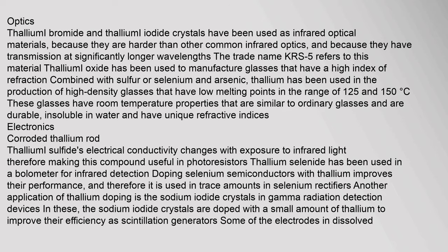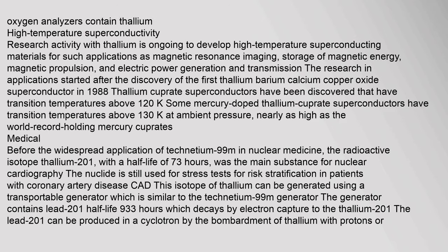Doping selenium semiconductors with thallium improves their performance, and thallium is used in trace amounts in selenium rectifiers. Thallium doping is also used in sodium iodide crystals in gamma radiation detection devices to improve their efficiency as scintillation generators. Research with thallium is ongoing to develop high-temperature superconducting materials for applications such as MRI, magnetic energy storage, magnetic propulsion, and electric power generation. The first thallium barium calcium copper oxide superconductor was discovered in 1988; thallium cuprate superconductors have transition temperatures above 120 K, and some mercury-doped thallium cuprate superconductors exceed 130 K.